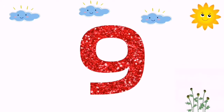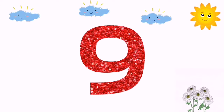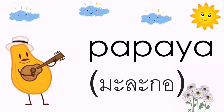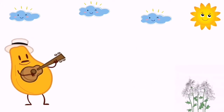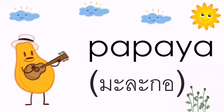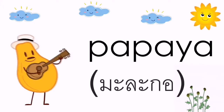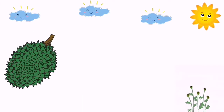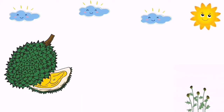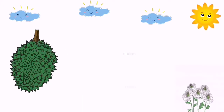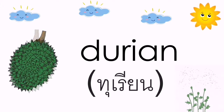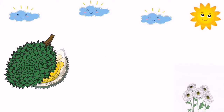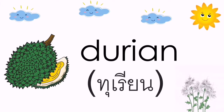Number nine: papaya. Again, papaya. Number ten: durian. Again, durian.